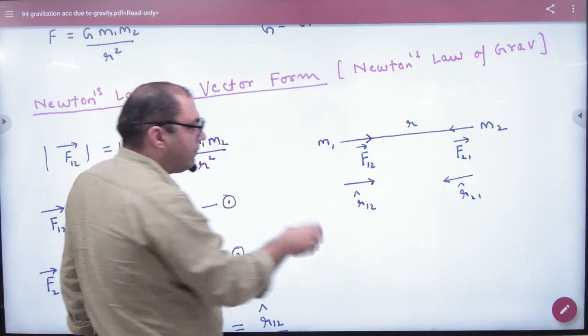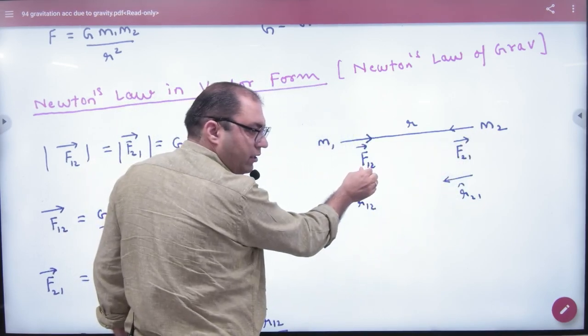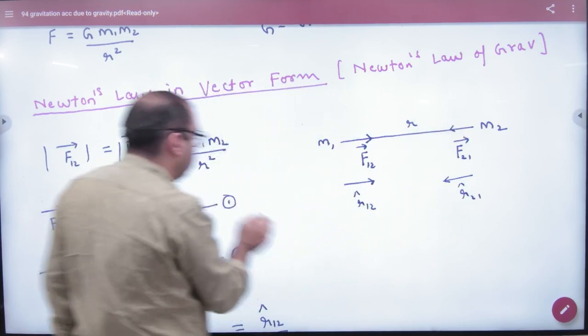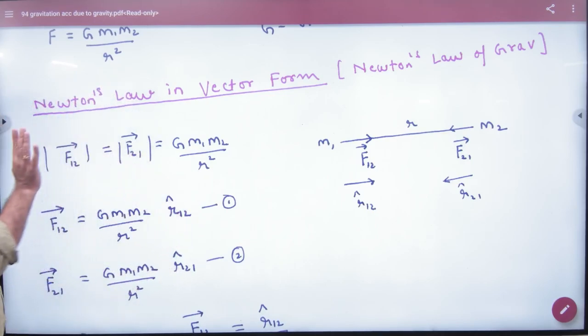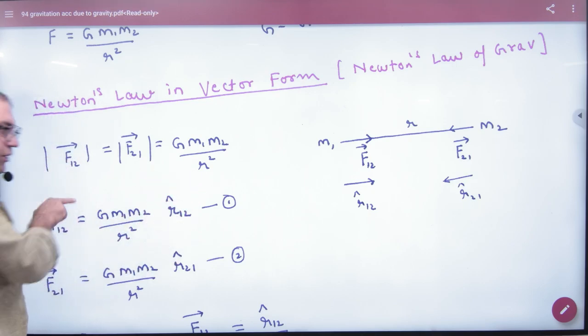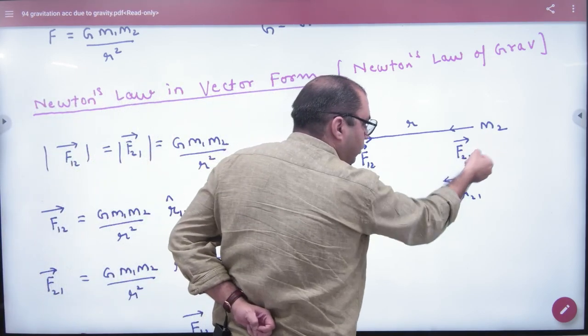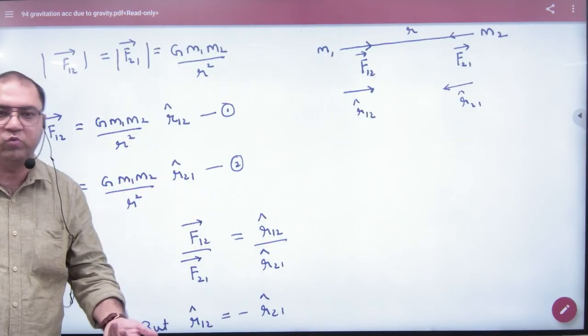So right means from 1 to 2, that means that F1,2 vector is right. And what is r1,2 cap? So what will be after F1,2 vector? r1,2 cap. If the unit vector assumed towards left, r2,1 cap, then what will be after F2,1 vector? r2,1.